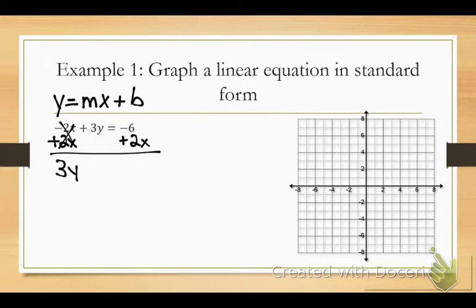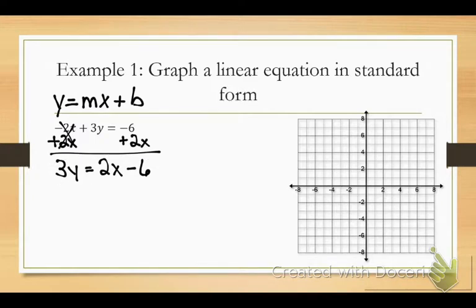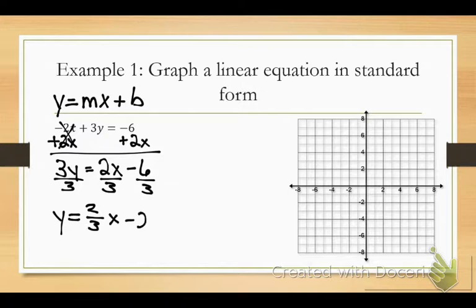My whole goal is to get y by itself. So now I have 3y equals — according to slope-intercept, which term do I write first? The sign is really important. Is 6 positive or negative? It is negative. But is it in slope-intercept form now? No. So now what do I do across the entire equation? Divide by 3, 3, and 3. And y equals 2/3 x minus 2.